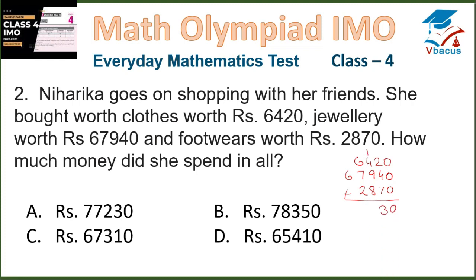Adding the values: in the units place it is 0; 4 plus 2 is 6, plus 7 is 13, carry 1; 4 plus 1 is 5, plus 9 is 14, plus 8 is 22, plus 2 carry is carried; 6 plus 2 is 8, plus 7 is 15, plus 2 carry is 17, carry 1; 6 plus 1 is 7. So the total is Rs. 77,230 spent in all, which is option A.